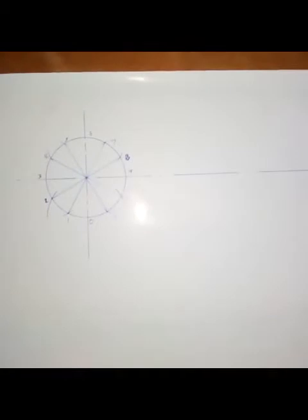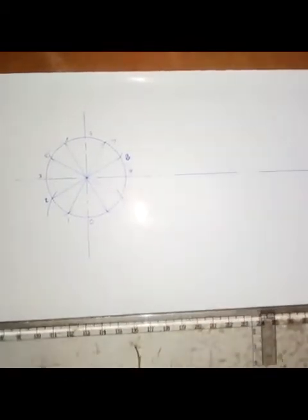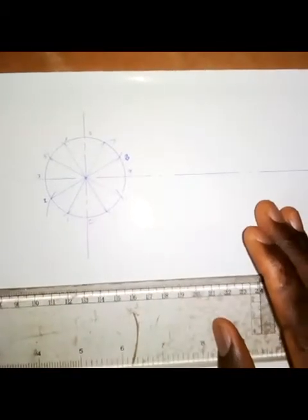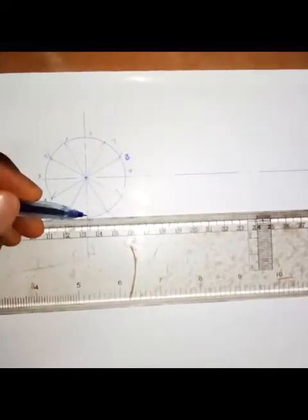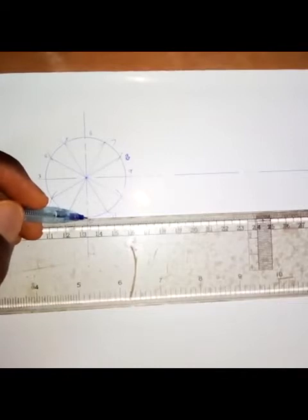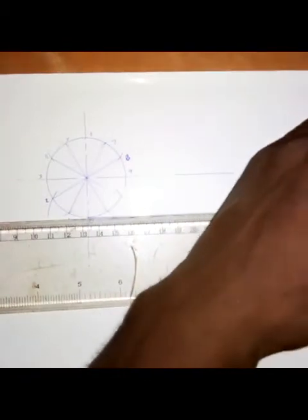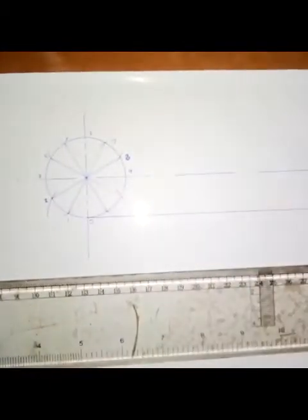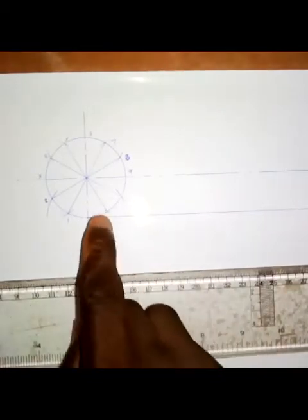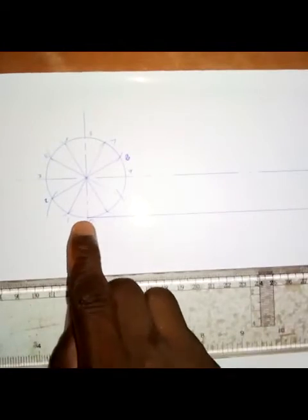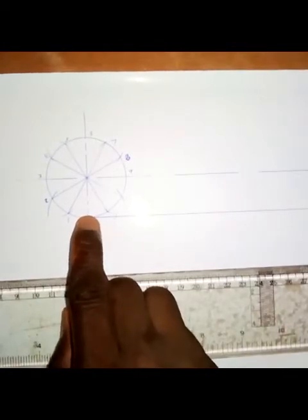The next thing we are going to do is draw a straight line through which this circle is rolling. From point zero — which is the starting point — draw a straight line. This circle is rolling on this straight line. Next, we calculate the circumference of this circle, and after calculating it, we measure that distance on this straight line.